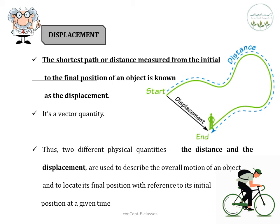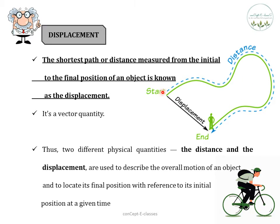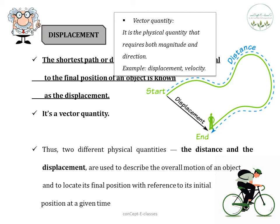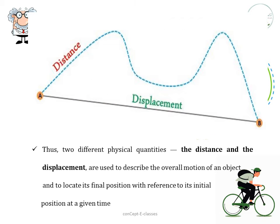What is displacement? It is the shortest distance measured from the initial position to the final position. Distance is the total path covered by an object from its starting point to its end point, whereas the shortest distance from the initial to the final position is termed as displacement. Displacement is a vector quantity — it requires both a numerical value, which we call magnitude, and direction. It shows whether the object goes north, east, or west. Hence we call displacement a vector quantity, and these two physical quantities, distance and displacement, are used to describe the overall motion of an object.